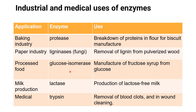Glucose isomerase is used in processed food to manufacture fructose syrup from glucose. Lactase is used in milk production to produce lactose-free milk. Trypsin is used in medicine to remove blood clots and in wound cleaning.